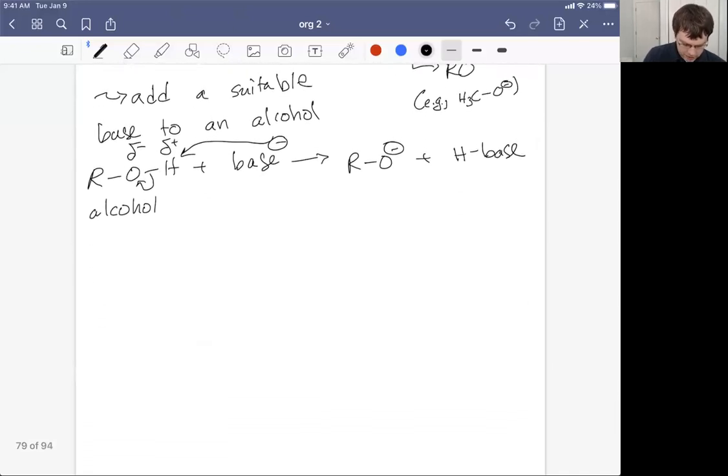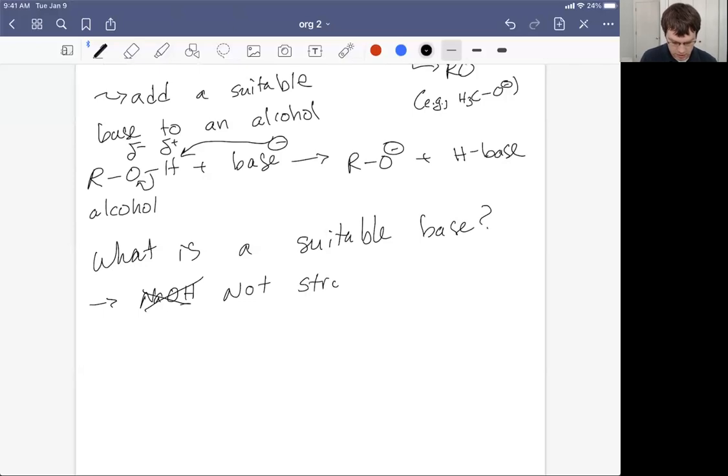With this in mind, let's ask ourselves what is a suitable base? So NaOH, that's a good base, that's a strong base by definition. No, not strong enough for making an alkoxide. Turns out that alkoxides are more basic than hydroxides. Alcohols are less acidic than water. So what we want to do instead is use something like NaH, which is sodium hydride.